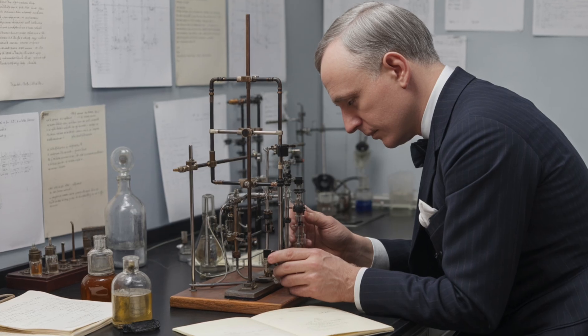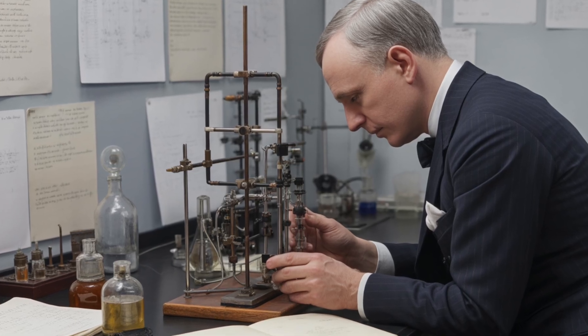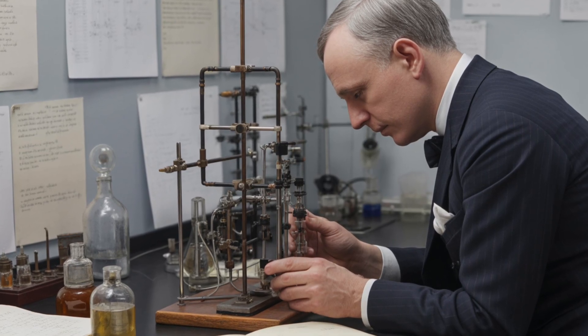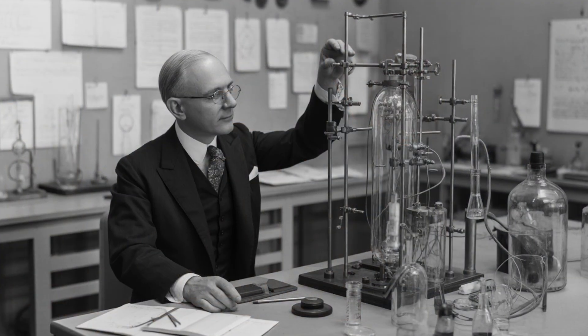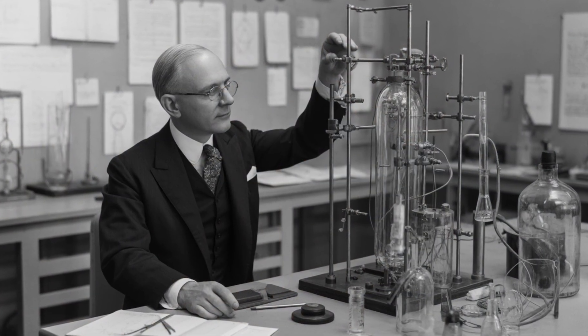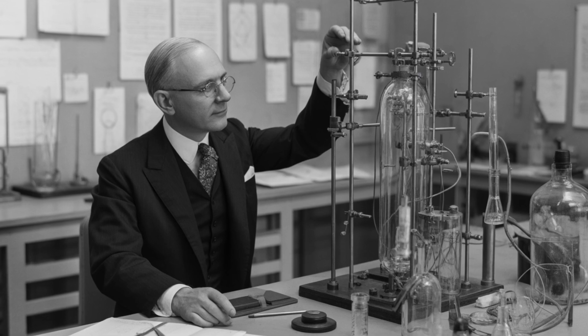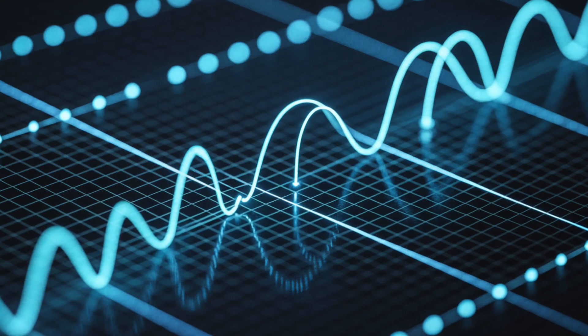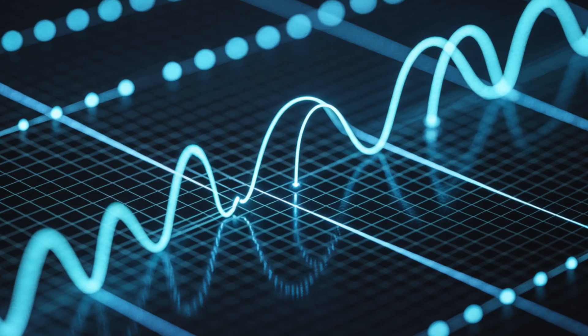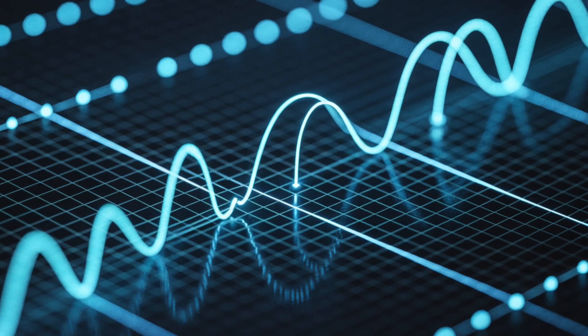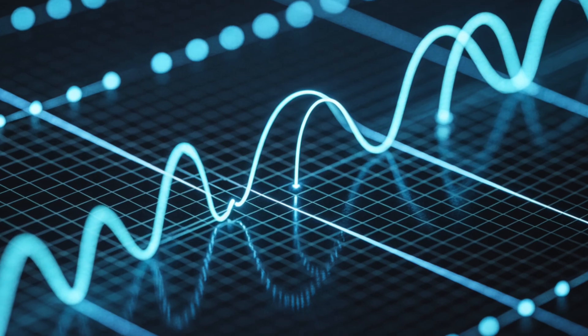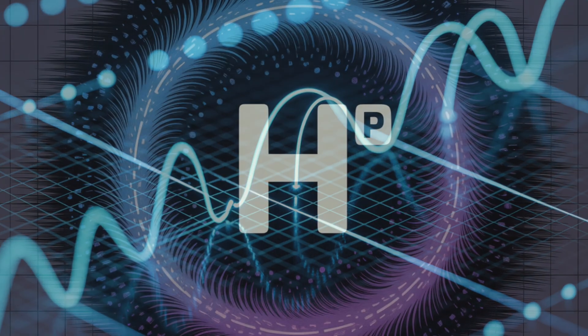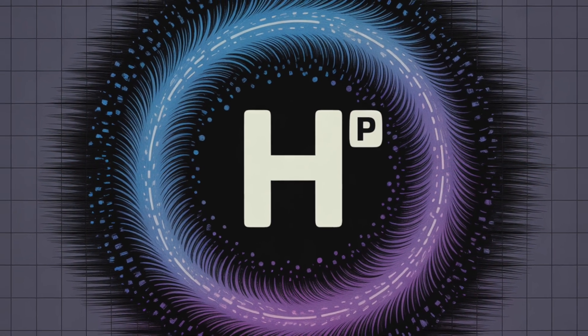Over the following decades, scientists tested and confirmed Einstein's model with precision instruments. Robert Millikan, initially skeptical, set out to disprove Einstein's photon theory, only to end up verifying it completely. His meticulous experiments, measuring electron energies under varying light frequencies, confirmed the linear relationship between photon energy and frequency, and provided an accurate value for Planck's constant.